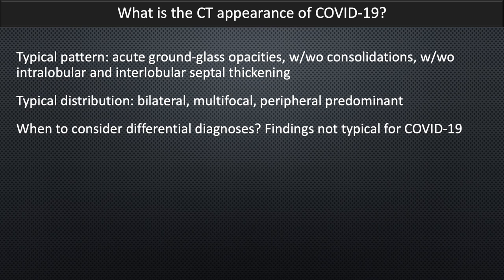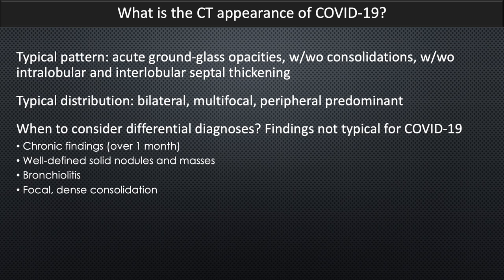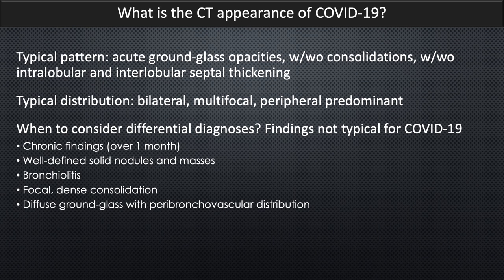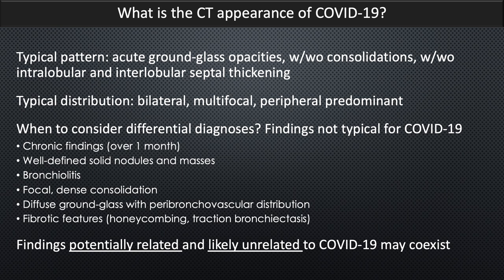When should one consider differential diagnosis? Whenever you have CT findings that are not typical for COVID-19. Any chronic findings, especially findings that have been present and are known to be stable for at least a month. Well-defined solid nodules and masses — these have not been described in association with COVID-19. Bronchiolitis, and that's different from other respiratory viruses. Focal dense consolidation, much more likely to represent bacterial infections. Diffuse ground glass opacities with peribronchovascular distribution, a pattern more likely related to pulmonary edema. Fibrotic features such as honeycombing and traction bronchiectasis, which are seen in the setting of interstitial lung diseases. It's also important to realize that in any given patient, findings potentially related to COVID-19 may coexist with findings that are likely unrelated to COVID-19.